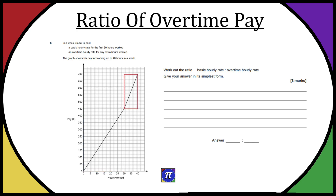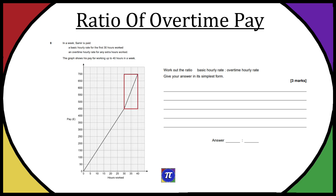If we look at the first line, we can see it goes all the way up to 30 hours, and on the corresponding pay it's £450. Then continuing reading the question, it says an overtime hourly rate for any extra hours worked — that's that second line. So the graph shows his pay for working up to 40 hours in a week, and we have to work out the ratio of basic hourly rate to overtime hourly rate.